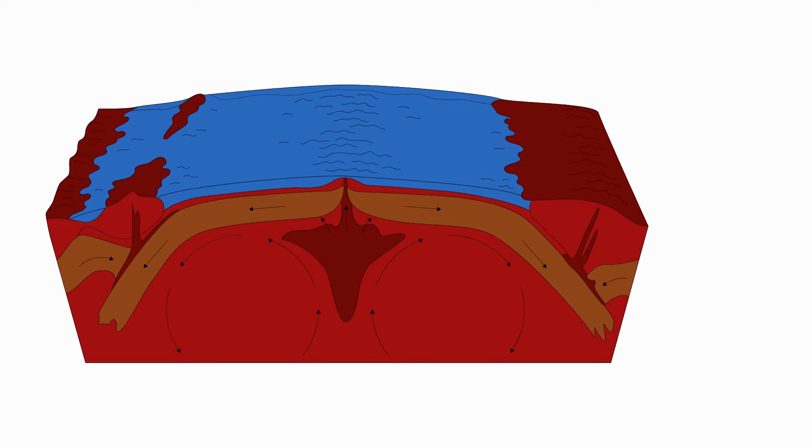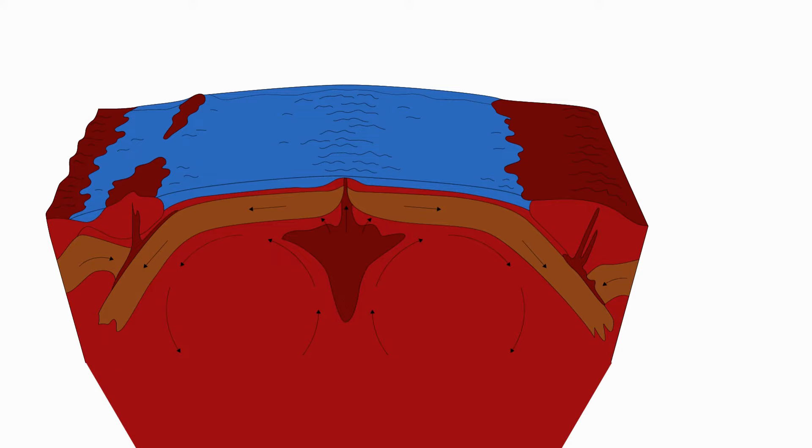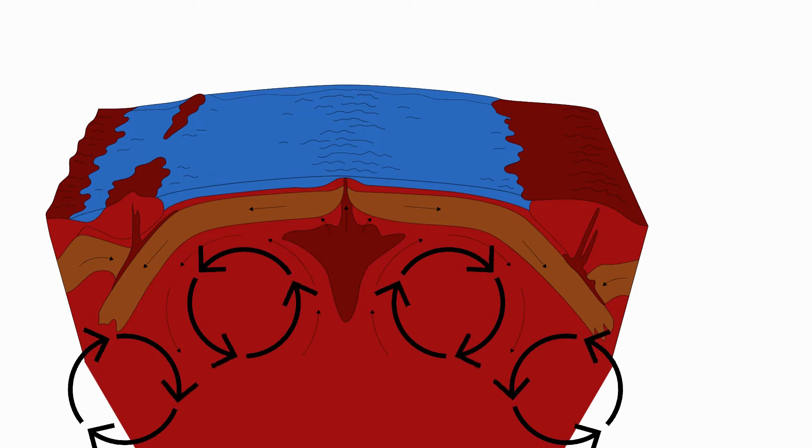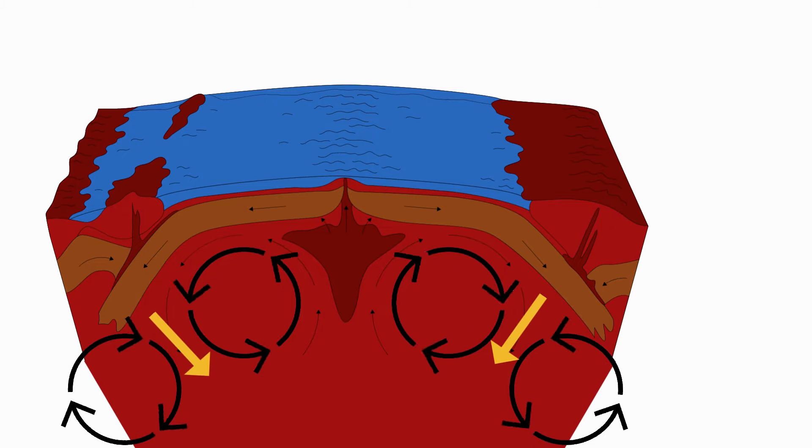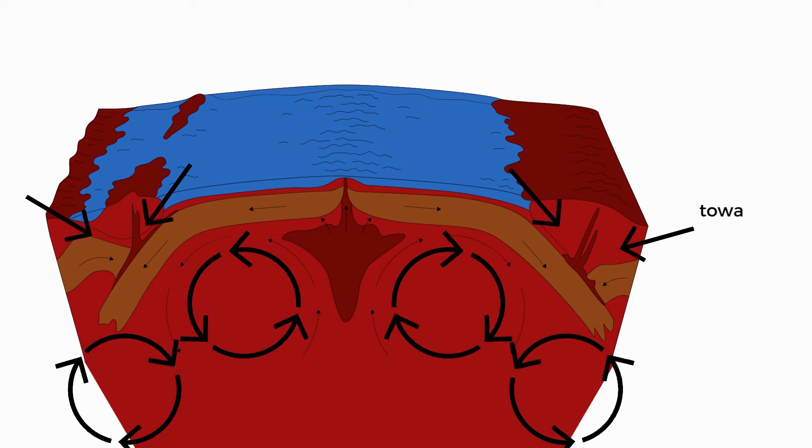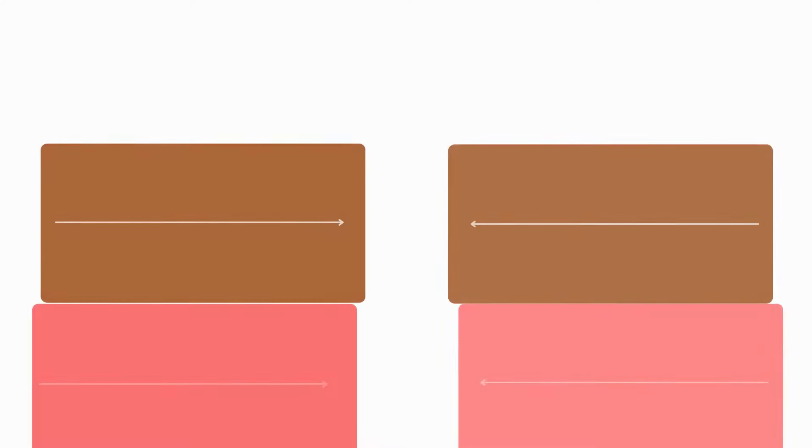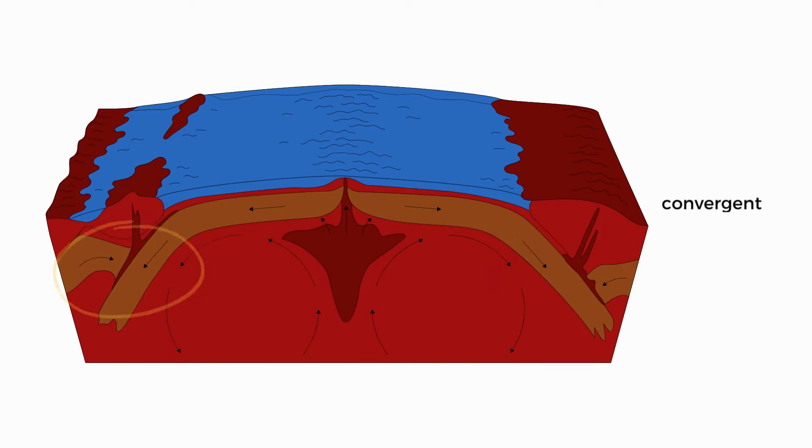Now let's extend the mantle a little bit. There will be more convection currents next to the ones we just looked at. The magma at the top of the mantle has now cooled and will sink. This movement causes the two plates to move towards each other, creating what we call a convergent plate boundary that is destructive.